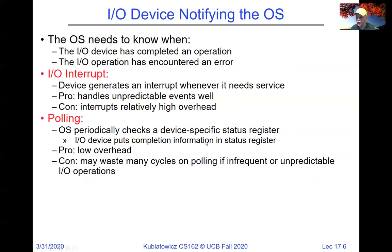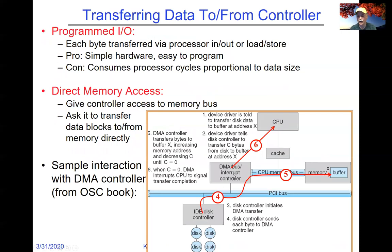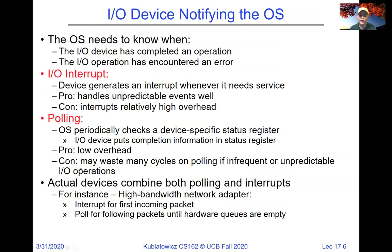There's a question about maintaining cache coherency with DMA. If part of memory is in your cache and the DMA controller is overwriting it, what happens depends on the system. Some systems automatically invalidate cache lines when the DMA controller writes them. Others require the CPU to flush the cache before starting a DMA operation to get coherence. Actual devices combine both polling and interrupts.